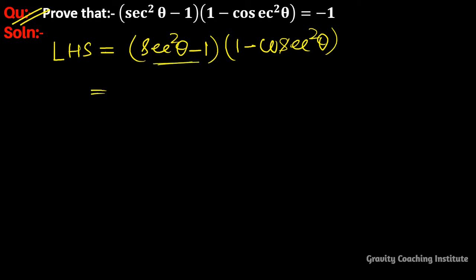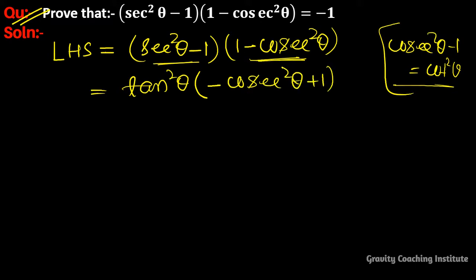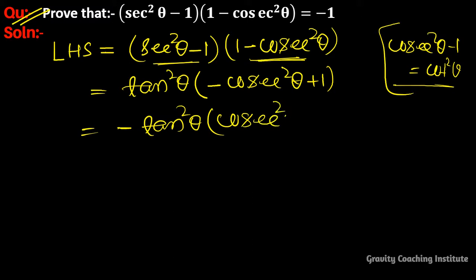The formula for sec²θ - 1 is equal to tan²θ. And 1 - cosec²θ equals negative cot²θ.